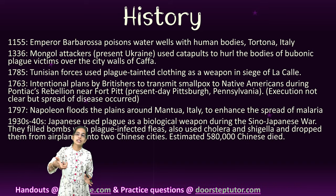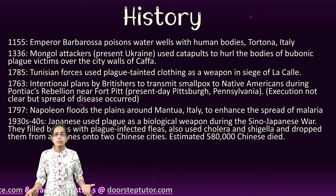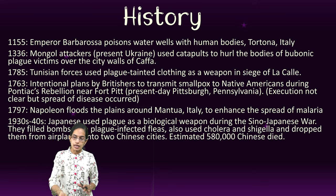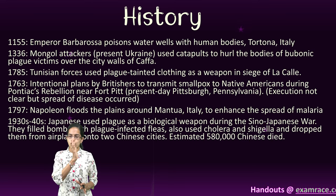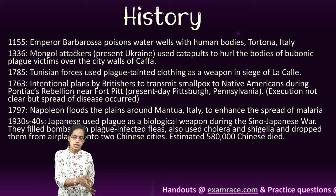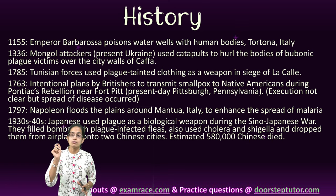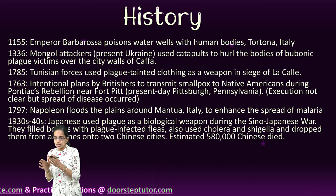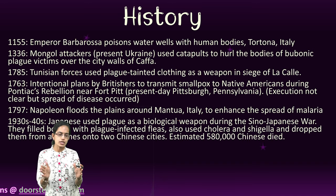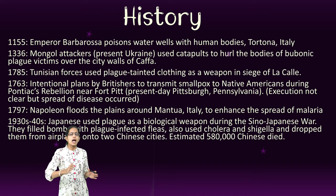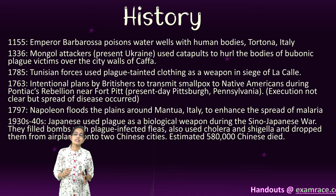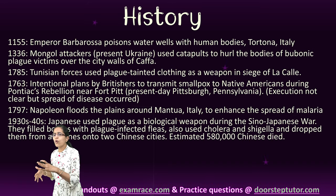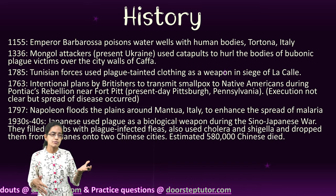Napoleon conducted a simple experiment — he flooded regions around Italy to spread malaria. Japan used plague, cholera, and shigella as biological weapons on two major cities of China during the 1930s to 1940s during the Sino-Japanese war, and it is believed that nearly 580,000 Chinese died as a result. This created a momentum around biological weapons manufacturing.